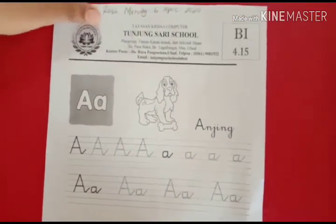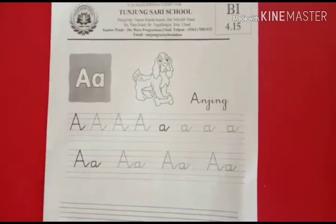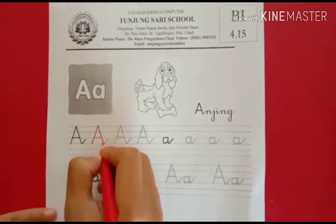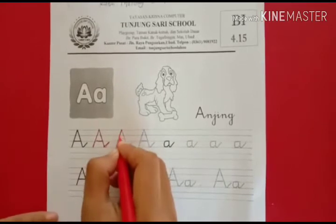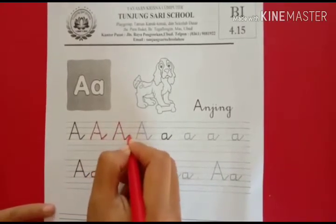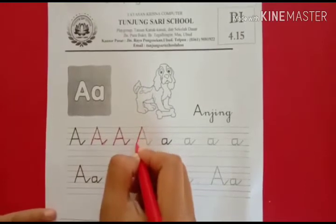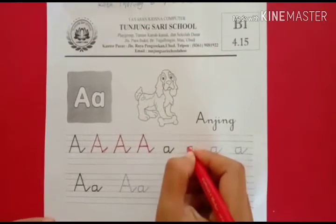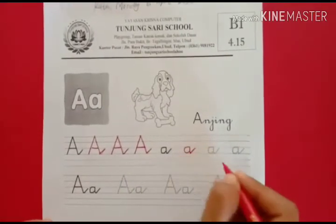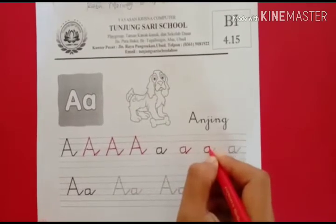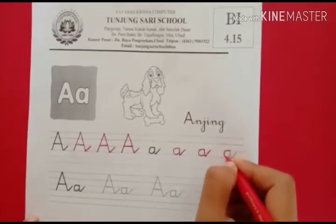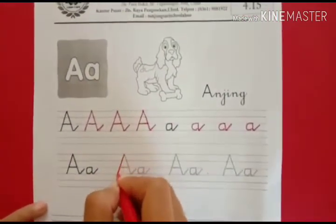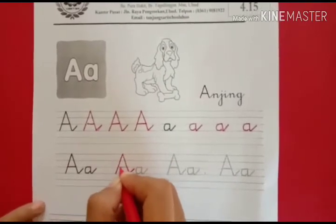If you are finished, let's do retracing first — you have to thicken the dotted letters. Do it slowly, pelan-pelan. If you study diligently, your handwriting will get better and you'll get an 'Excellent' at school. If your writing is neat you get Excellent; if it's not neat, you get 'Well Done'.